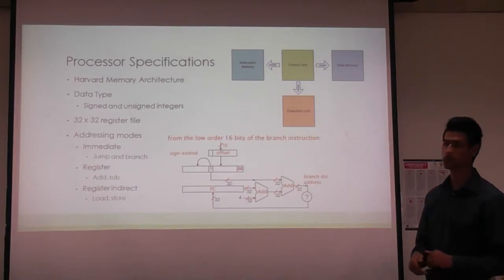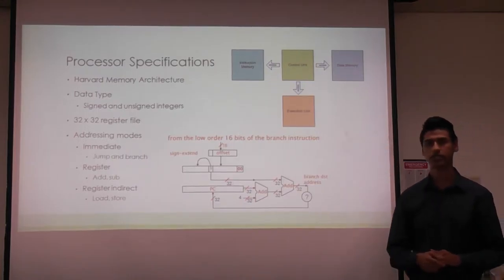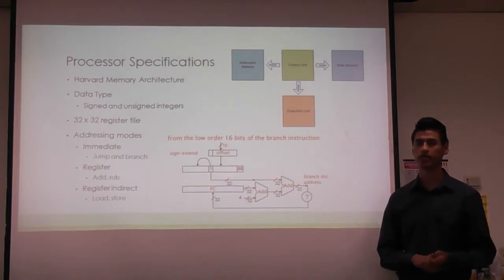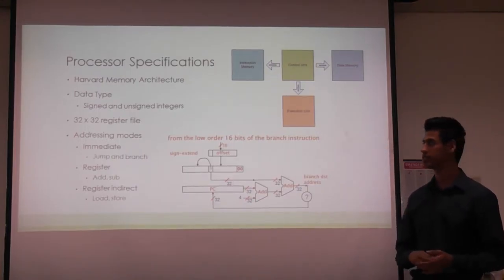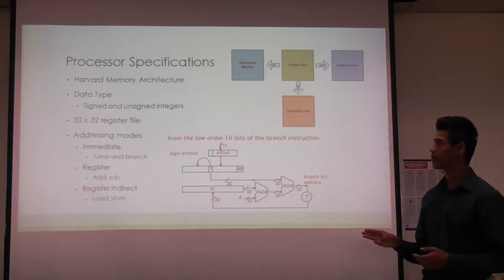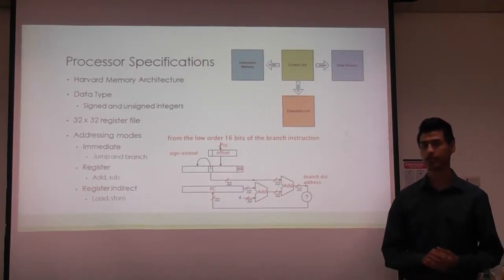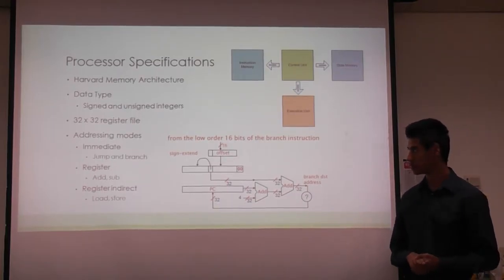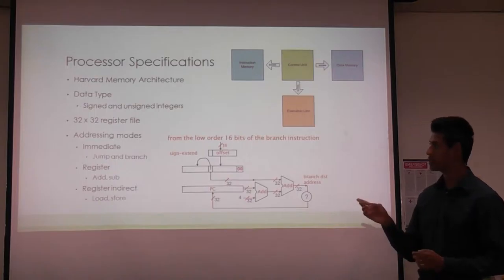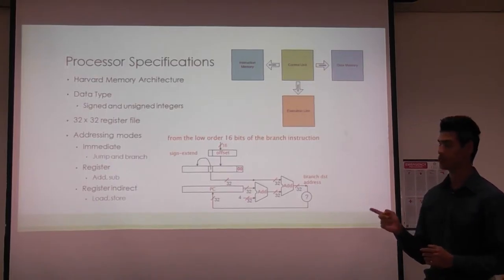We have two data types: signed and unsigned integers. We have 32 by 32 registers and three addressing modes: immediate, register, and register indirect.